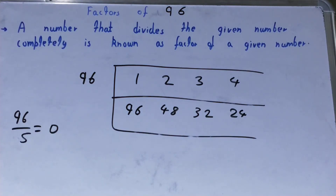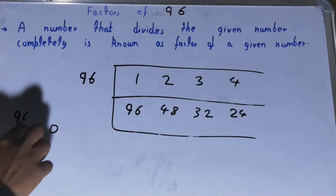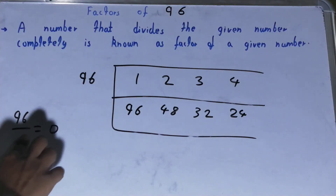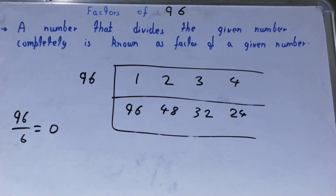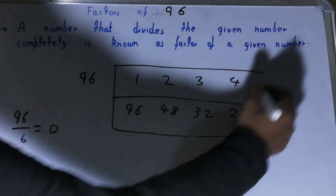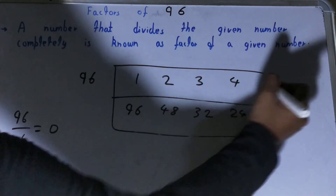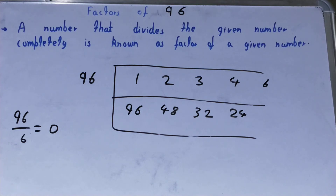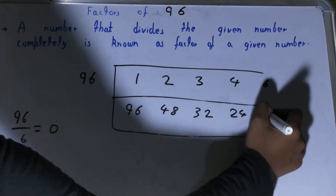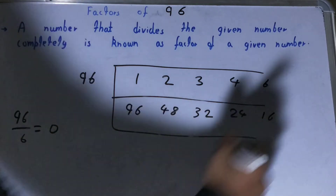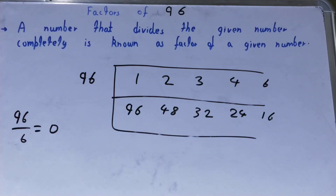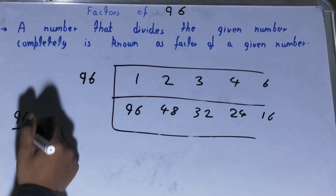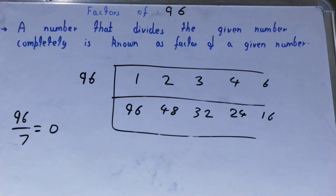If we try with 5, we get the remainder as 1, so 5 is not a factor. After 5, if we try with 6, it divides evenly — 6 times 16 equals 96 — so 6 is a factor and 16 is also a factor.